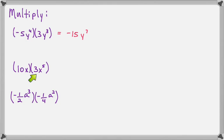Now, we have 10x times 3x to the fifth. 10 times 3 is 30. X times x to the fifth is x to the sixth.